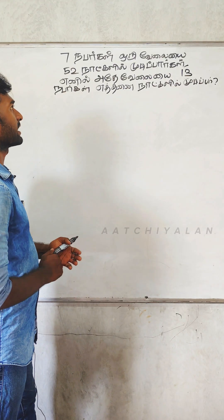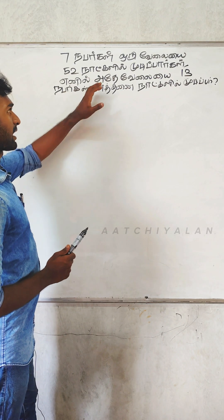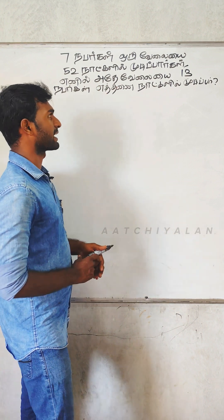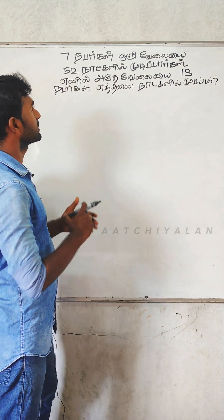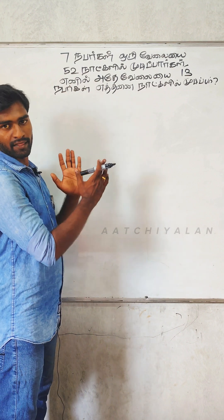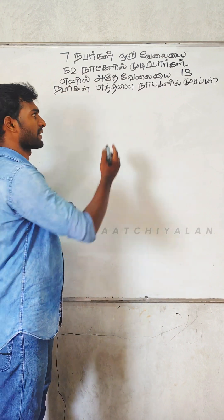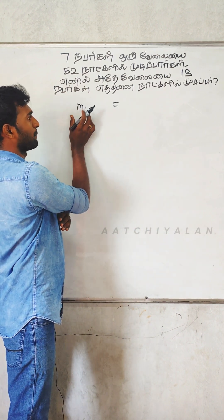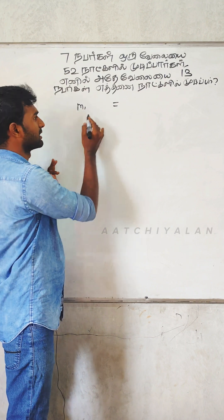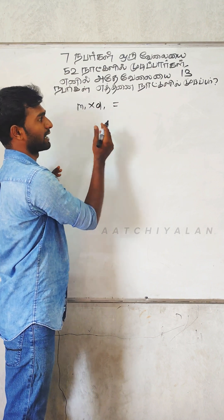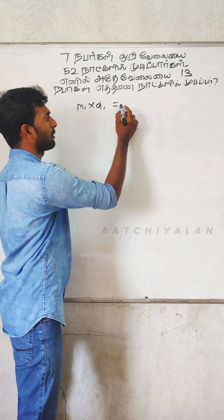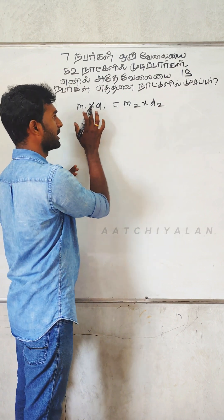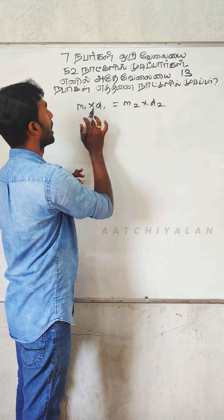Which number is 50,000? Which number is 15,000? That is equal — M1 into D1. That is members. Into D1 — that means M2 into D2. This is the formula. Simple. M1 into D1 is equal to M2 into D2.